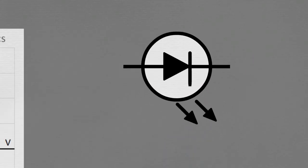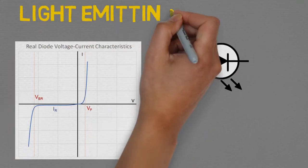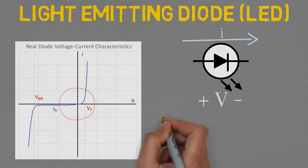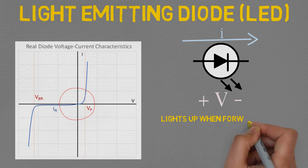Finally, this is the symbol for the light emitting diode, also known as LED. This diode releases photons when electrons jump between energy levels, meaning that the LED lights up when it is forward biased.